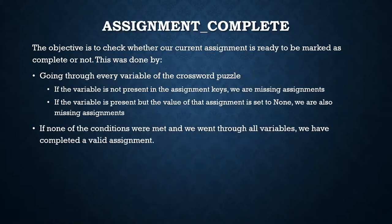For assignment complete, we only have to check if we have a valid word for every variable. Therefore, we go through every variable in the crossword puzzle and check if in our assignment keys there is that variable, and if that variable has a word assigned to it, and it is not none. If it is none or if the variable is missing, we are not able to mark the assignment as complete.